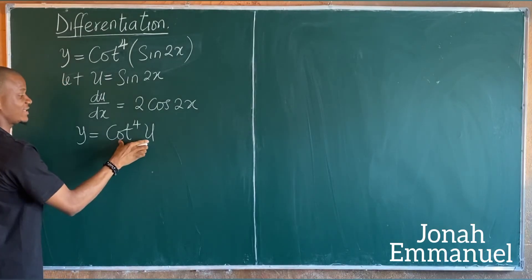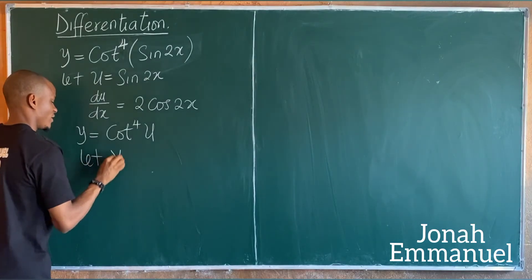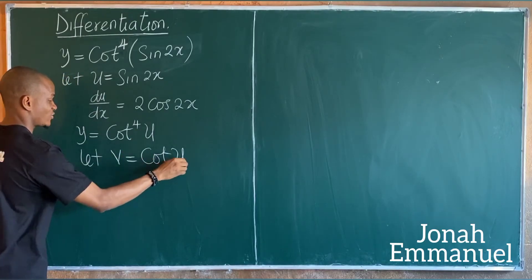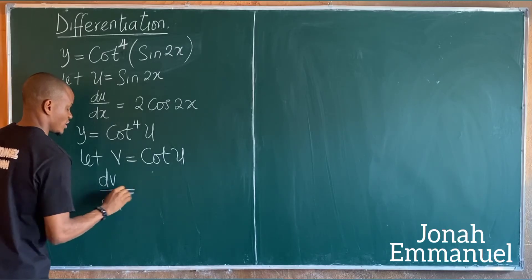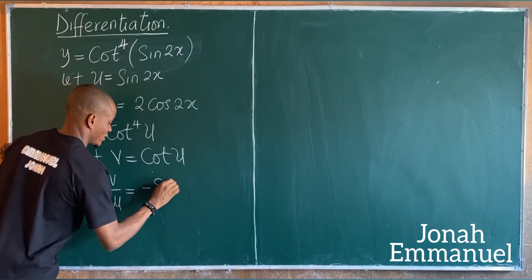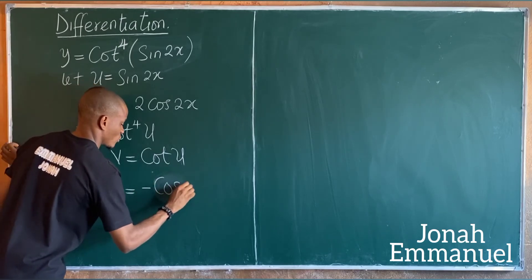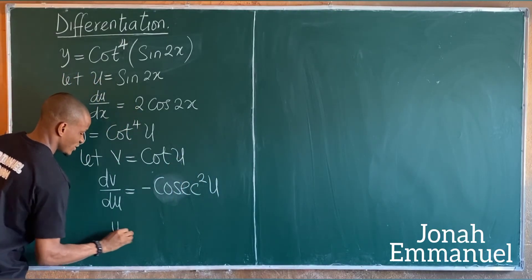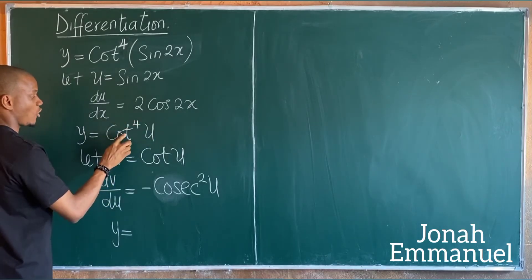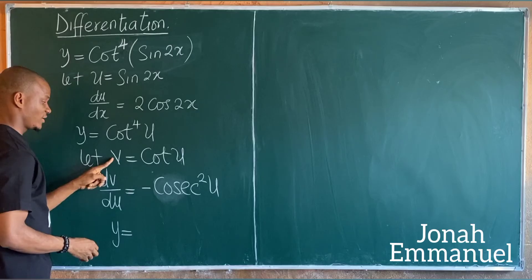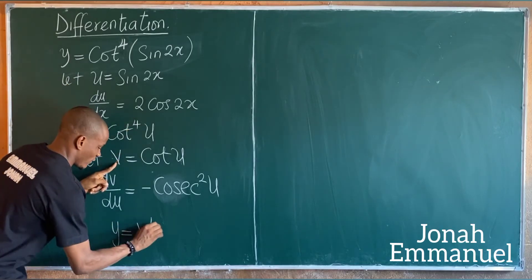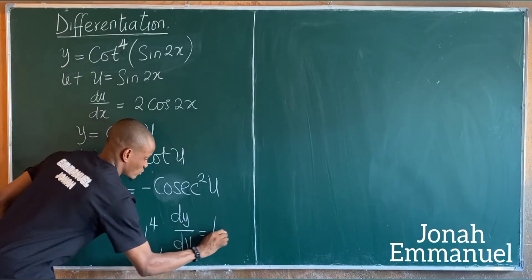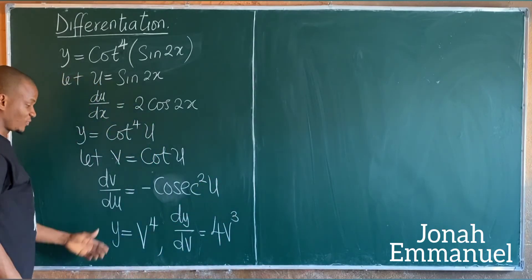That means y is now equal to cos to the power 4 of u. Since this is not simplified, let v equal cos u. Differentiating, dv/du equals minus sin u. Now y equals cos u to the power 4, and since cos u is v, y equals v to the power 4, so dy/dv equals 4v cubed.